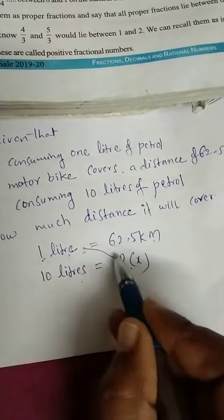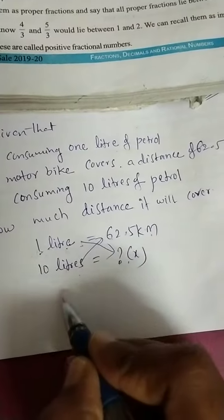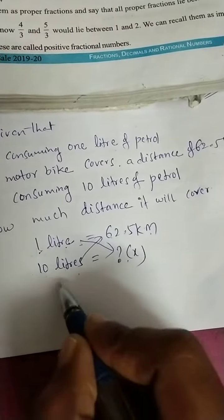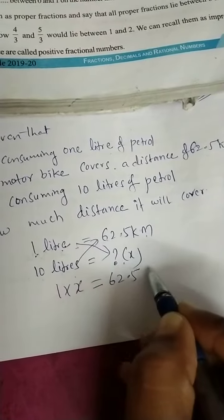Now do the cross multiplication. 10 into... here 1 into x. 1 into x is equal to 62.5 into 10.